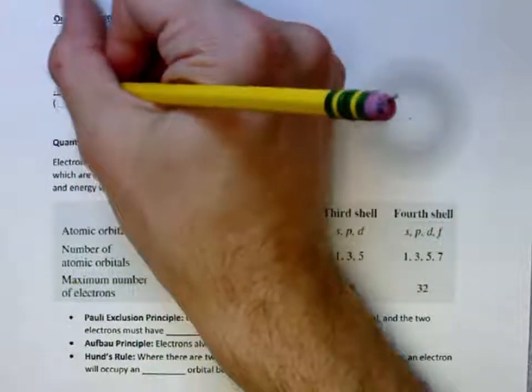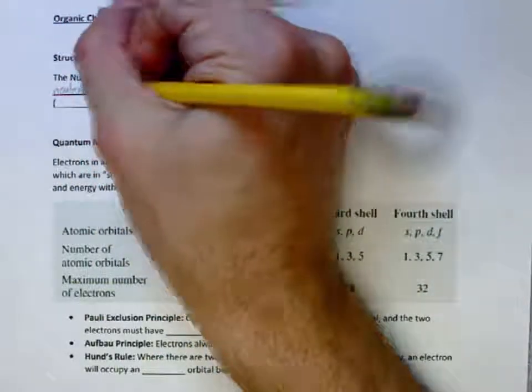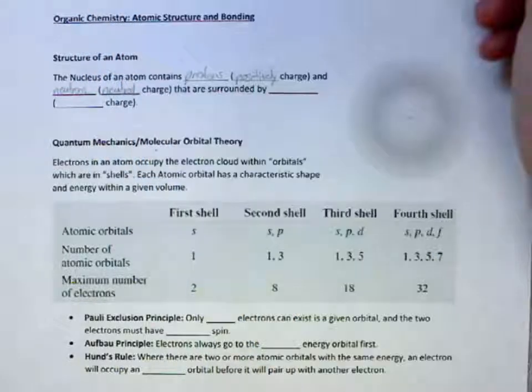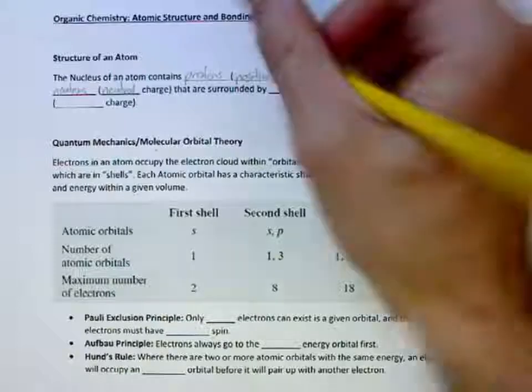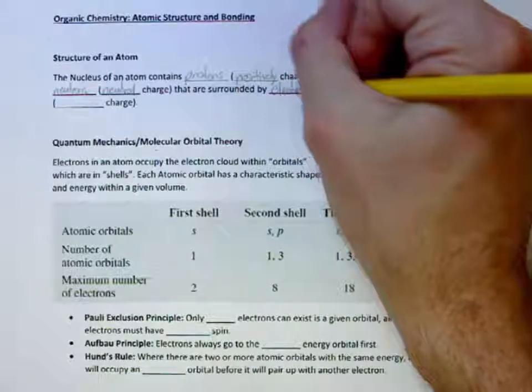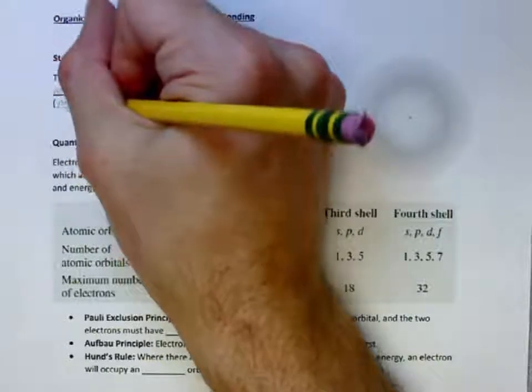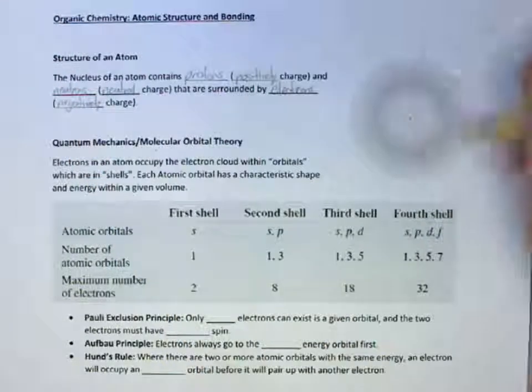And neutrons, which have a neutral charge, which is surrounded by electrons, which are negatively charged, in the electron cloud.